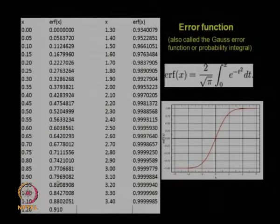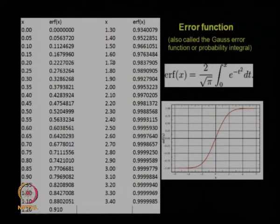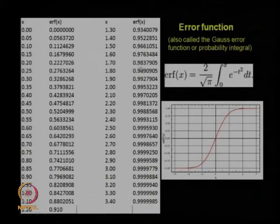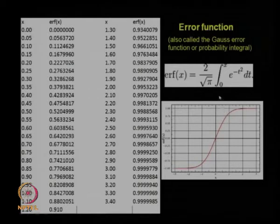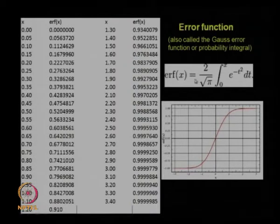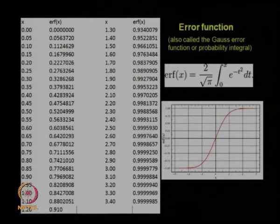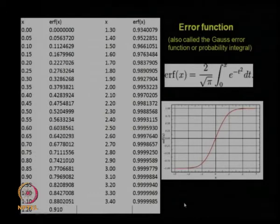There is a table which gives numerically integrated values for f(x) for different values of x. When x equals 0, the error function equals 0, and it keeps going up initially sharply, then stabilizes and reaches a value of 1. Beyond about 1.5 to 1.7, the error function is almost close to 1. This table is very useful in calculating yields.